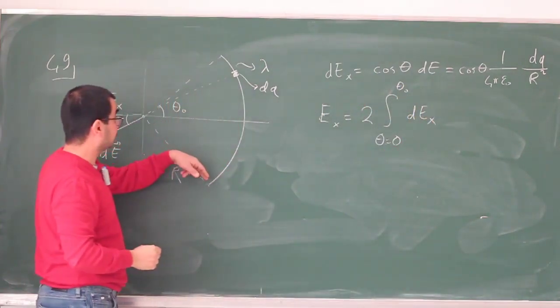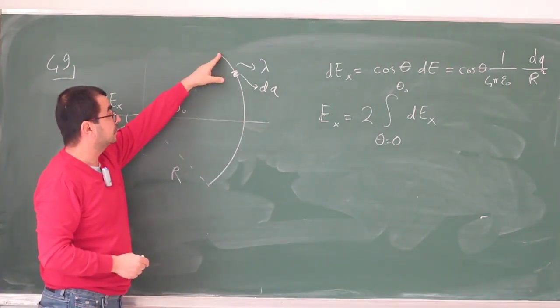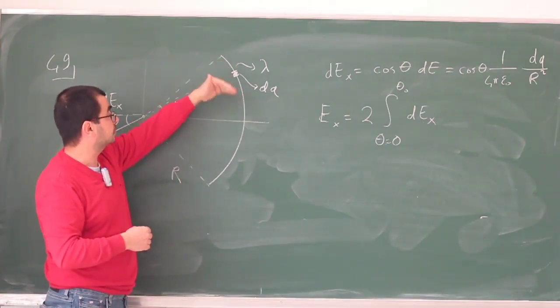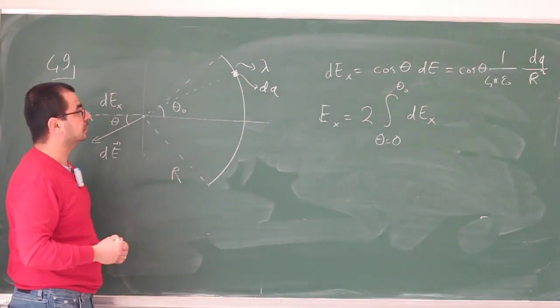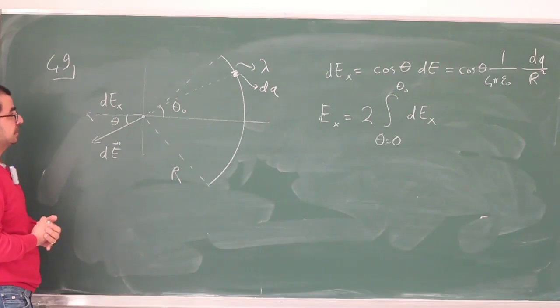I don't need to go from minus θ₀ to θ₀, that's not necessary. I can just go from 0 to θ₀ and multiply by 2, because the contribution, the horizontal contribution of this part is going to be the same as the horizontal contribution of this part. You can do it either way, it doesn't make a difference, but I think this emphasizes the symmetry a little bit more.